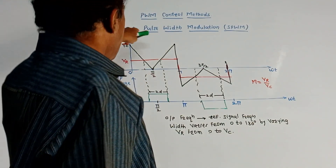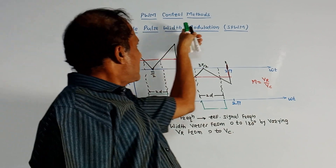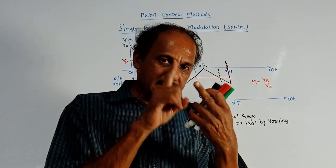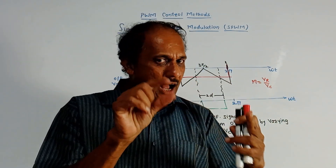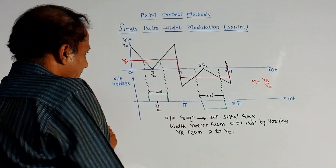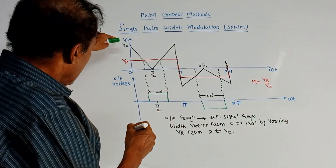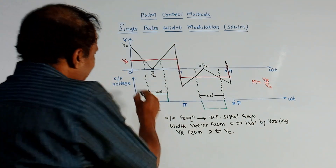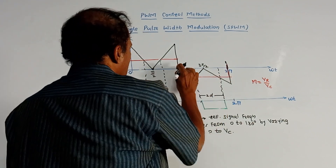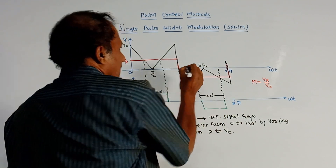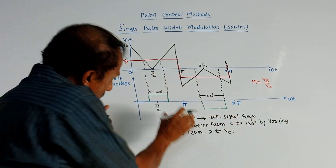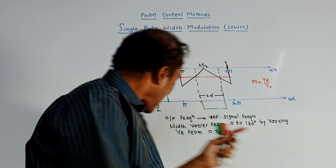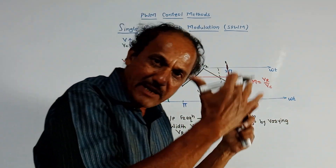The first type of PWM is single pulse width modulation, that is SPWM. As the name indicates, a single pulse is used during each half time interval. Look at this graph. This graph is basically a graph of V versus omega-t. The different intervals are marked as 0, pi, then 2pi. So between 0 to pi, one pulse is generated. It is single pulse width modulation and the width of this pulse can be varied.